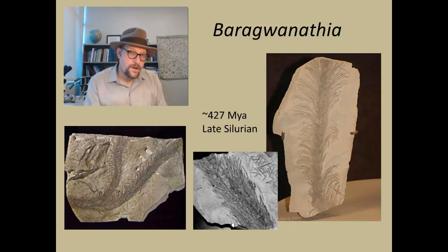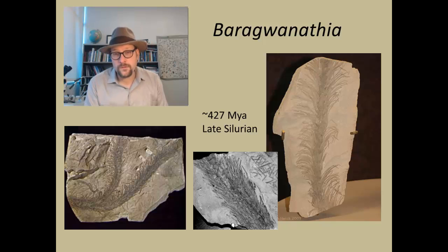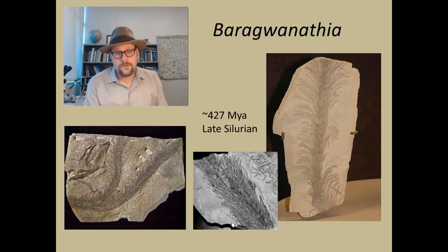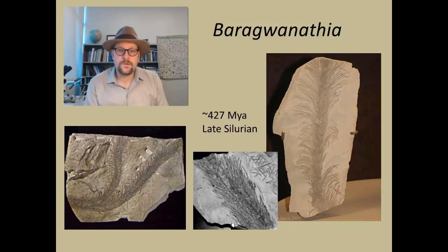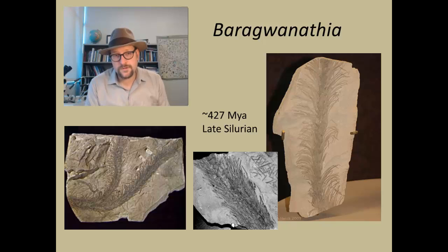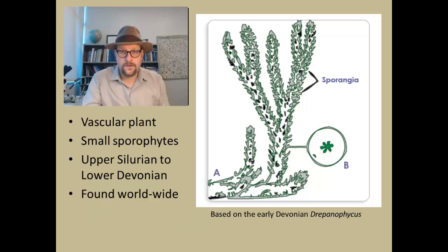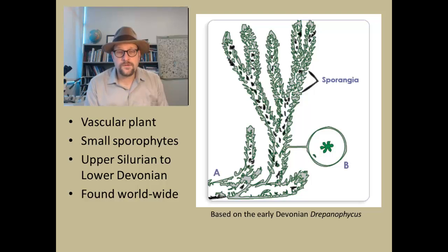This is Baragwanathia, and it is an amazing fossil. The best record of this fossil comes from Australia, but it's also been found in Europe and Asia. You can see that it looks very similar to the green algae we saw before, but there are a couple of interesting things. People who have studied Baragwanathia and looked at some of these leaves noticed different structures — they actually have sporophyte portions that come off the stems. And when you look at a cross-section, there appears to be some vascularization in these branches as they branch apart.